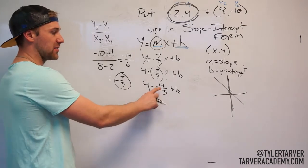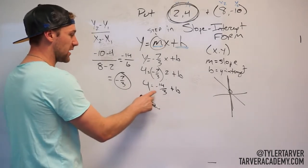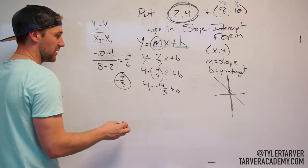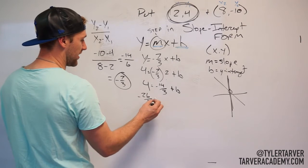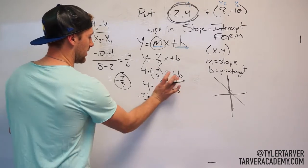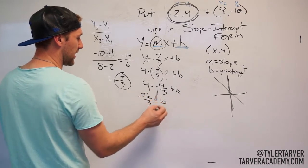And then our last step is we add, it's a negative, so we're going to do the opposite because we're going to cross the equal sign. So I'm going to add 4 plus 14 over 3. So it's going to be 20, negative 26 over 3, I think, unless I jacked that up. Okay, so I added that over there. 4 plus that is this equals b.